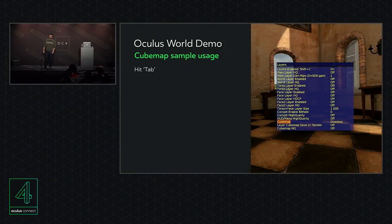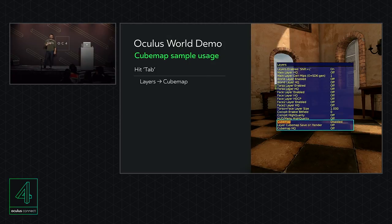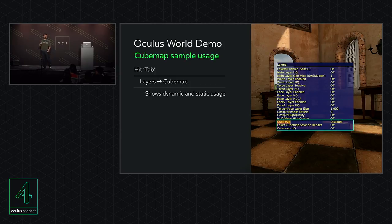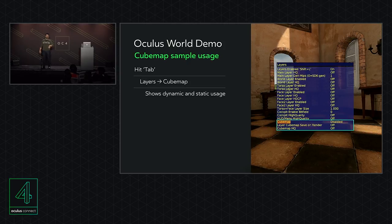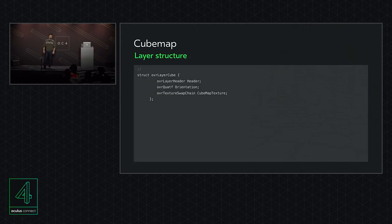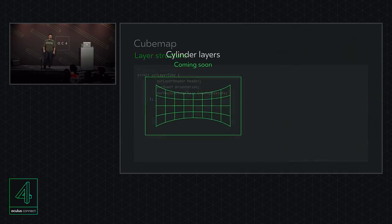In the latest version of the Oculus World demo, you can hit Tab, navigate to the layers cubemap section, and see how we demonstrate cubemap layers. We show both dynamic and static usage: static loads a texture from the hard drive, while dynamic takes a quick 360 capture of the environment around the camera and feeds it in as a cubemap. Looking at the data structure, the key new element is orientation — since there's no translation component, a quaternion orientation is all you need to worry about.